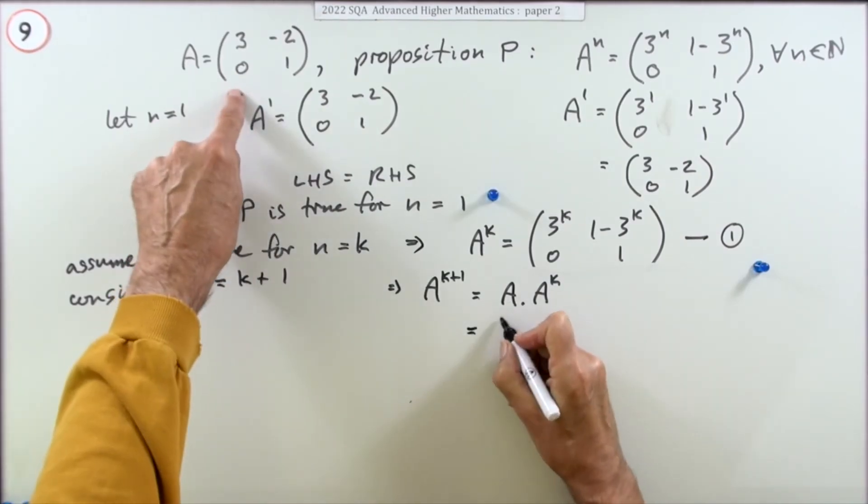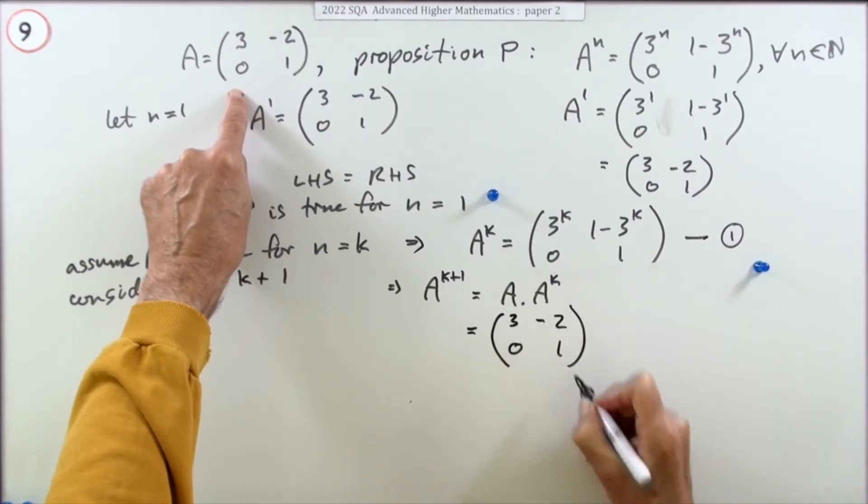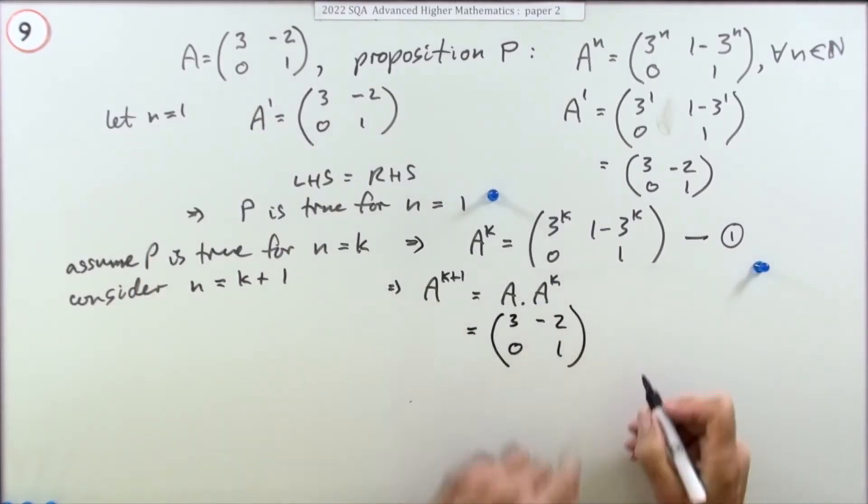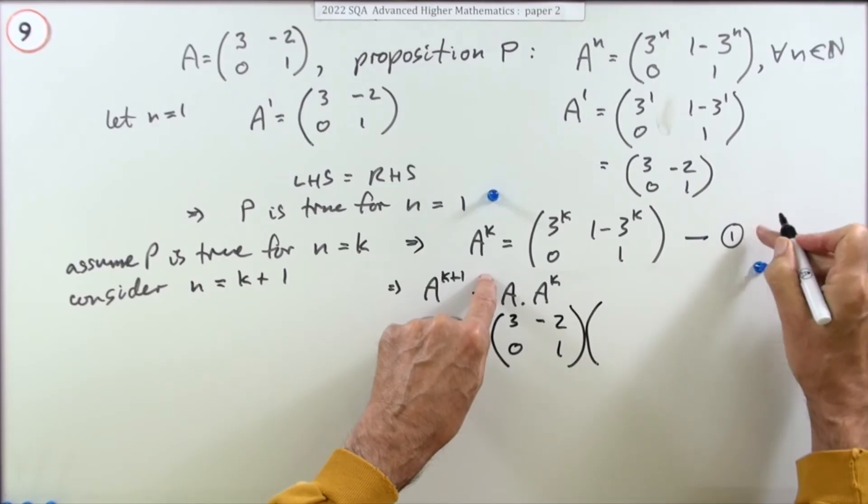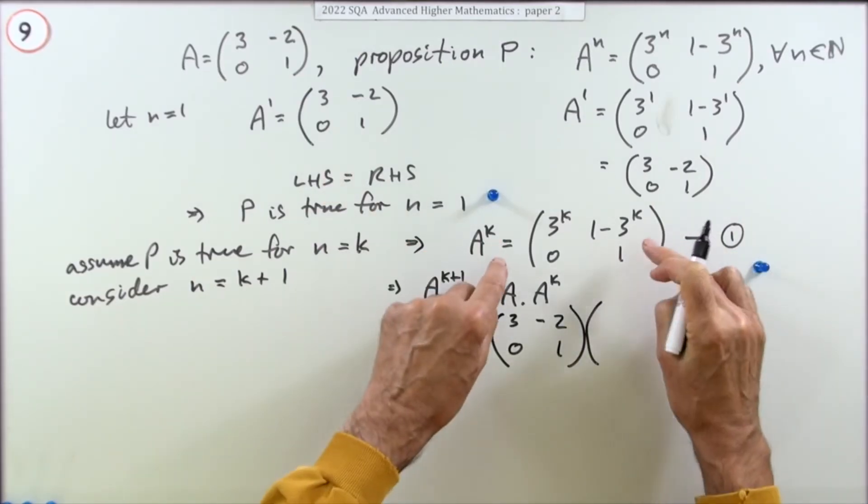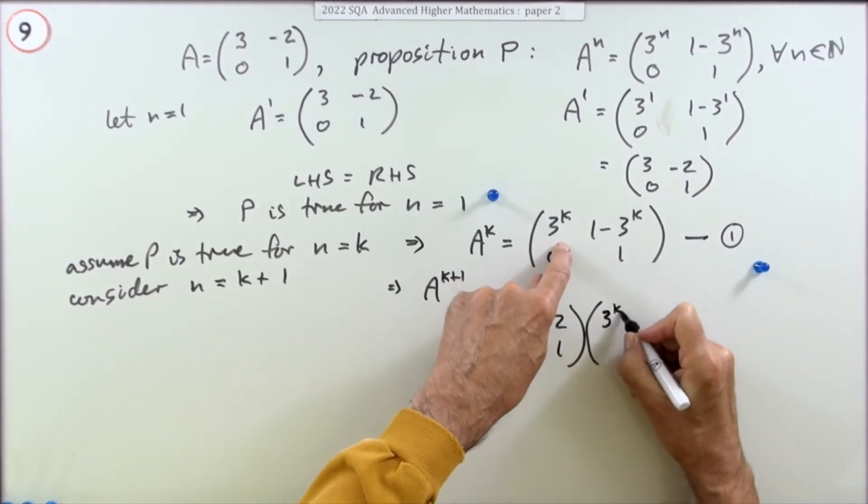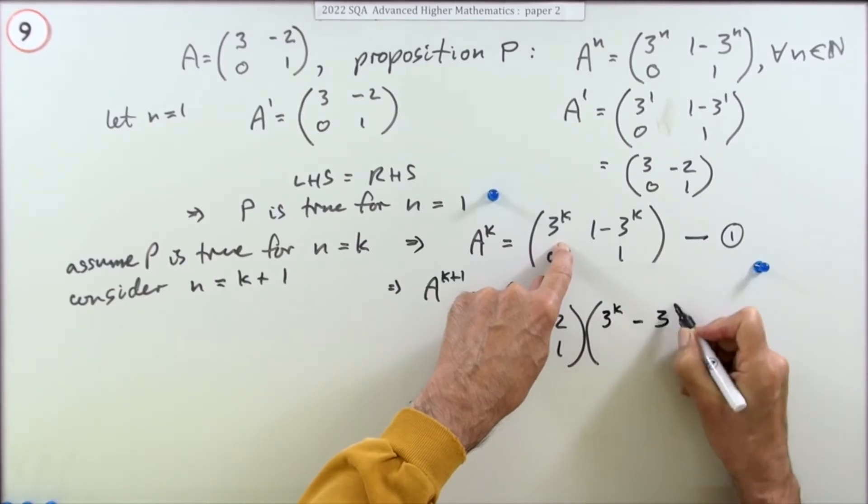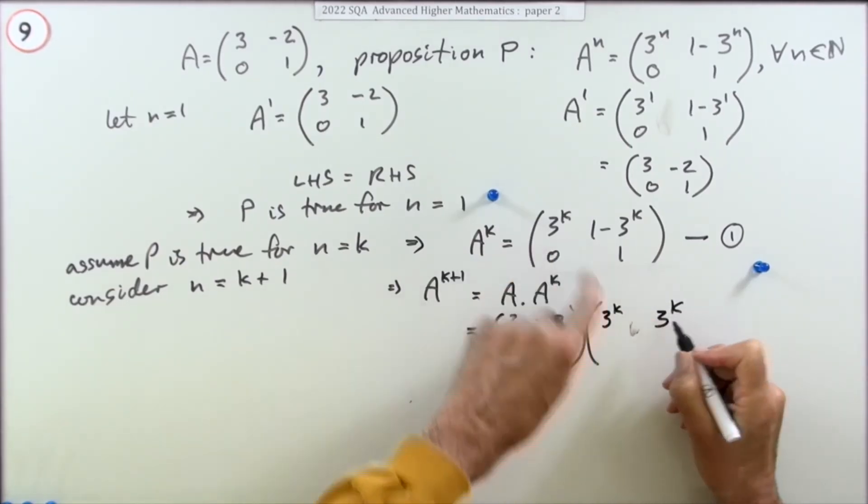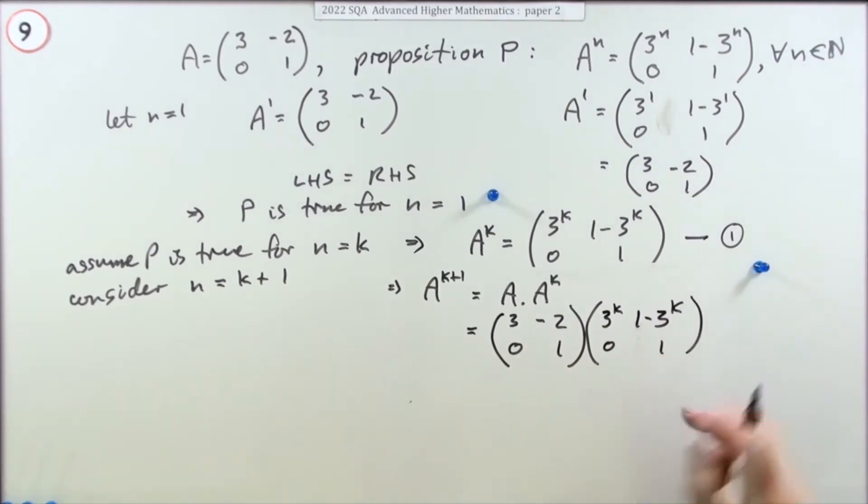Now we follow that through. What's A? A is (3, -2; 0, 1). And what's A to the k? Now I'm going to call in my inductive hypothesis. If that is true, that's the whole point. If that is true I could put it in here and get a value for this. So I've got (3^k, 1-3^k; 0, 1).